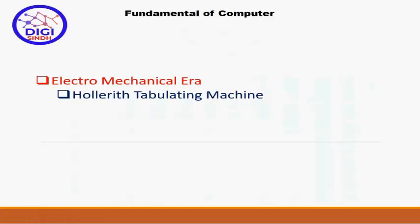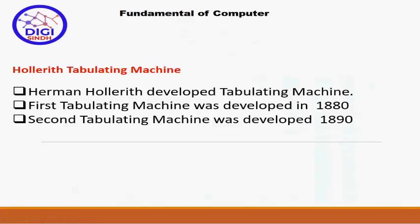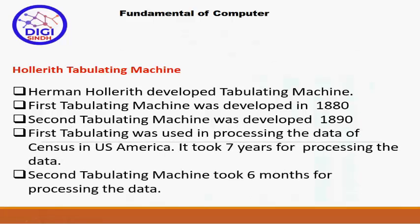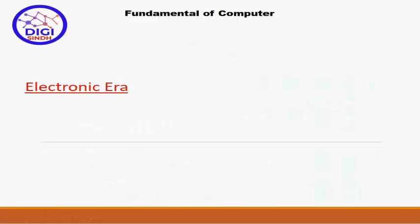Mechanical era کے اندر Hollerith tabulating machine cover کی تھی۔ Herman Hollerith نے یہ tabulating machine develop کی تھی۔ First tabulating machine 1880 میں آئی اور second tabulating machine 1890 میں آئی۔ دونوں machines US census میں مردم شماری کے لیے use کی گئیں۔ First machine نے data process کرنے کے لیے سات سال لیے، جبکہ second tabulating machine نے census data process کرنے کے لیے six months کا time period لیا۔